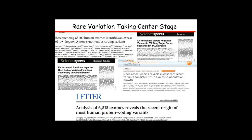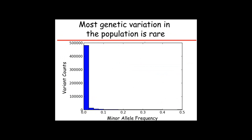From applying sequencing on a large scale — and eMERGE was certainly a big part of this — everyone has highlighted the fact that there is an extensive amount of rare variation in the human genome. Most of the variation in the genome is rare.